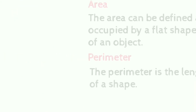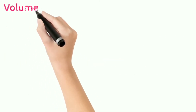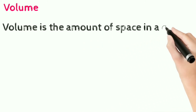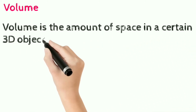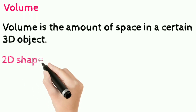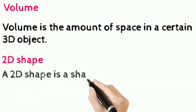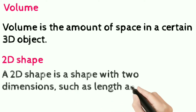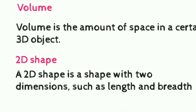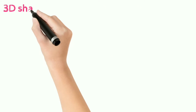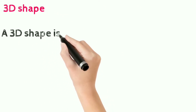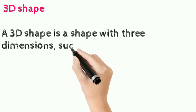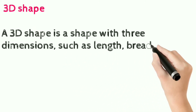Volume is the amount of space in a certain 3D object. A 2D shape is a shape with two dimensions such as length and breadth. A 3D shape is a shape with three dimensions — that is length, breadth, and height.